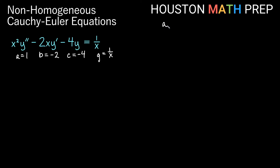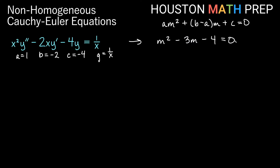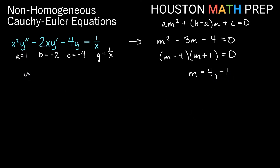To solve for m in a Cauchy-Euler equation, we use am squared plus (b minus a)m plus c equals 0. In this case that gives us m squared plus (negative 2 minus 1)m plus (negative 4) equals 0, so m squared minus 3m minus 4 equals 0. Factoring gives us (m minus 4)(m plus 1) equals 0, so m equals 4 and m equals negative 1. Our complementary function is therefore c1 x to the 4 plus c2 x to the negative 1, which we write as c2 over x.